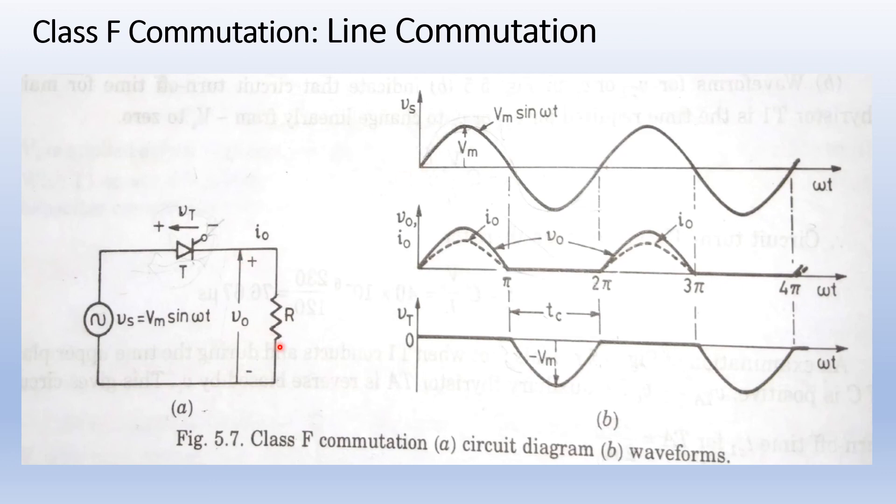Load is resistive in nature. With zero degree firing angle, the thyristor behaves like a diode. During the positive half cycle, the output voltage V0 is equal to the source voltage Vs and waveshape of load current I0 is identical with the waveshape of V0 for a resistive load.